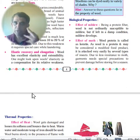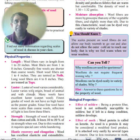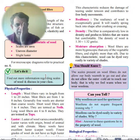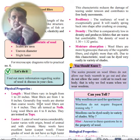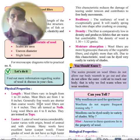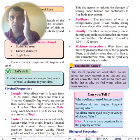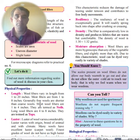Physical properties include length, luster, strength, elasticity, resilience, density, and moisture. Fiber length ranges from one inch to 20 inches, with most between one and eight inches. Short wools are one to four inches; longer coarse wools are up to eight inches.